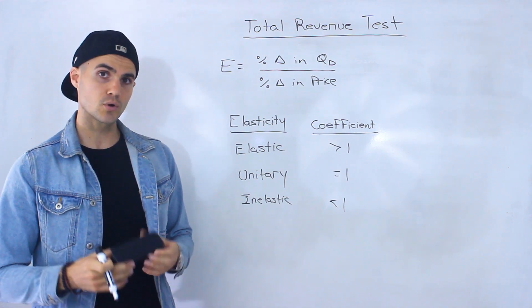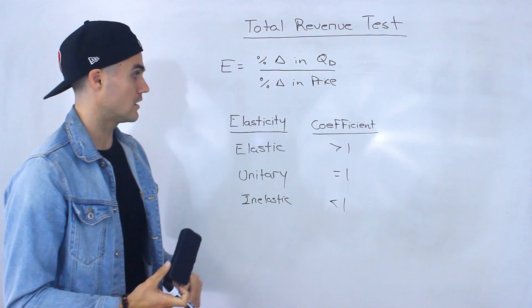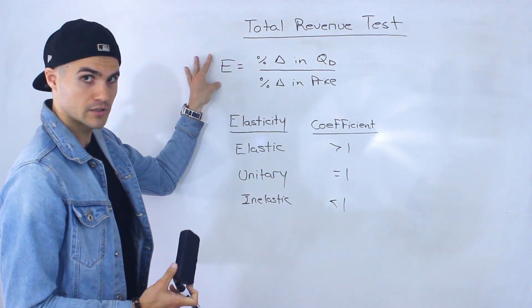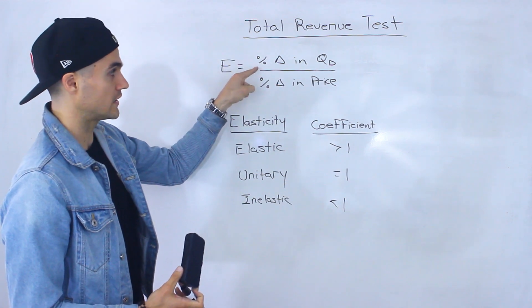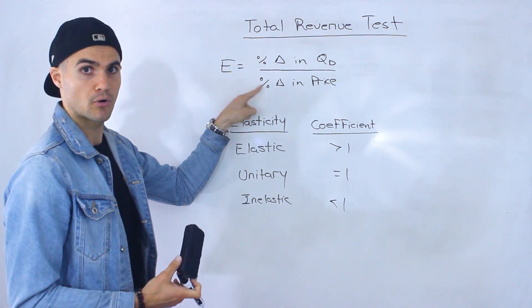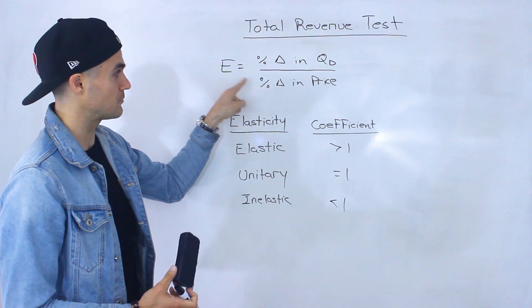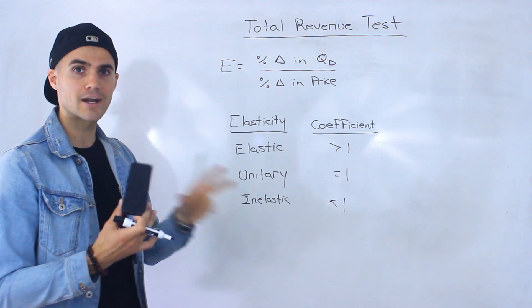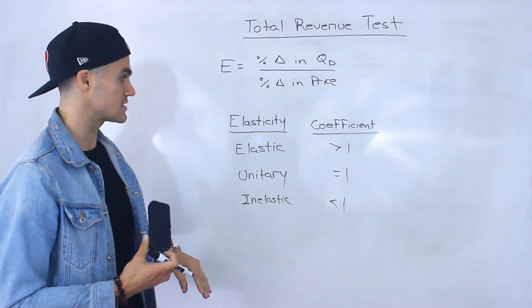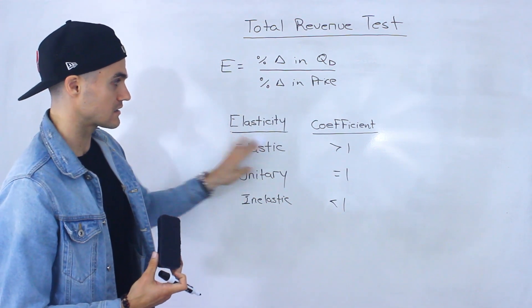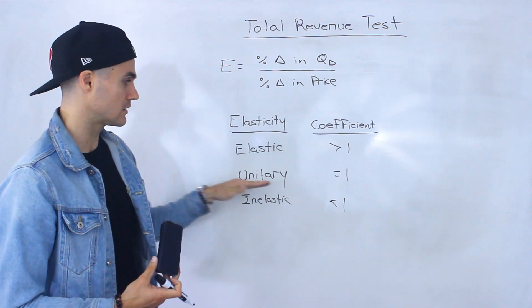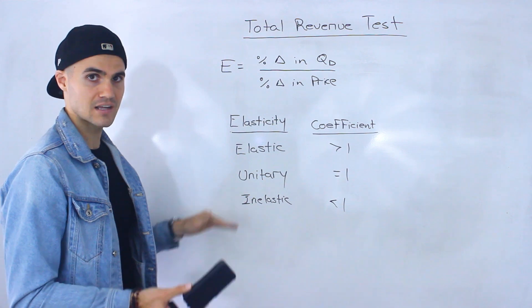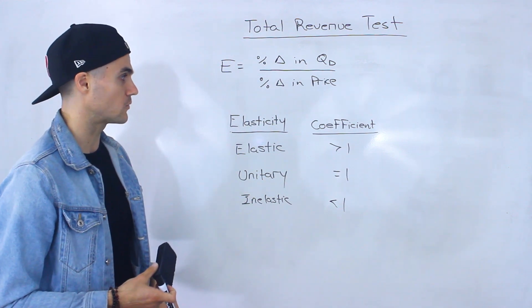Just to do a quick review on elasticity of demand: the price elasticity of demand coefficient is equal to the percentage change in quantity demanded over the percentage change in price. And depending on the value of this coefficient, we categorize that good or service as either being elastic if that coefficient is greater than one, unitary or unit elastic if it's equal to one, or inelastic if it is less than one.